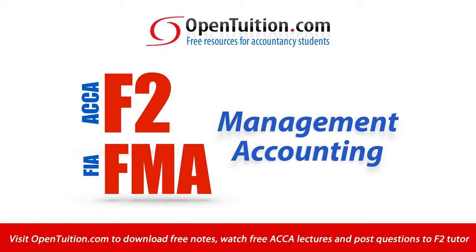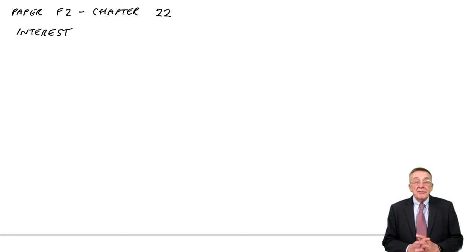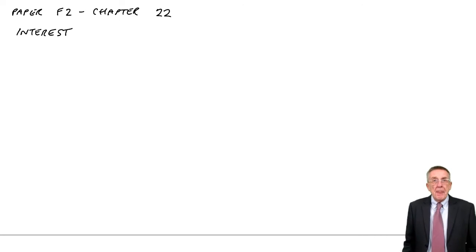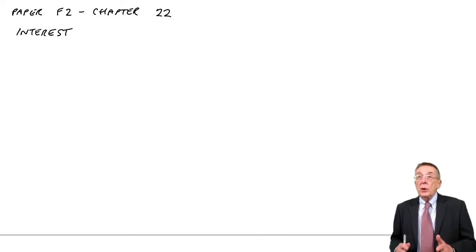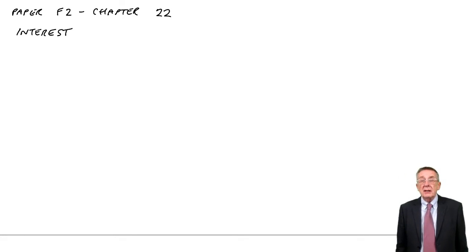This is a lecture from Open Tuition. To benefit from the lecture you should download the free lecture notes from opentuition.com. This lecture is on chapter 22 of the free lecture notes for paper F2 and it's on interest. In fact it's really a lead-in to the next chapter which is very important, which is appraising investments along with what we call capital budgeting. But in order to explain the techniques involved we need to go through this first on dealing with interest and how it works. I'll split this lecture into two otherwise it'll get too long.